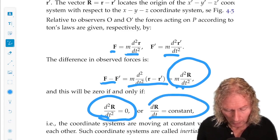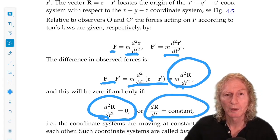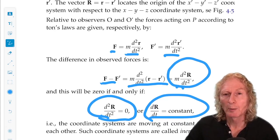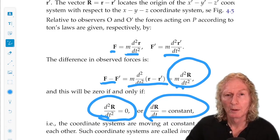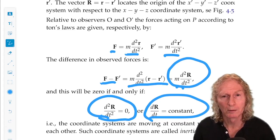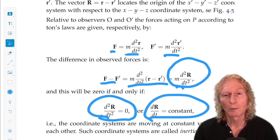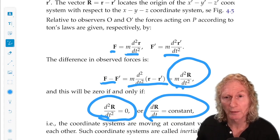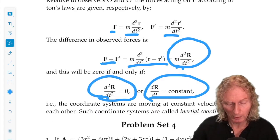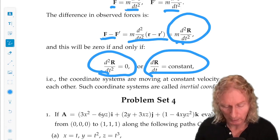So the interpretation is, each observer observes the same force acting on the particle if and only if their coordinate systems are moving with constant velocity with respect to each other. Constant velocity means direction and magnitude.